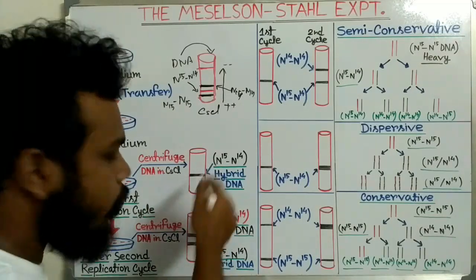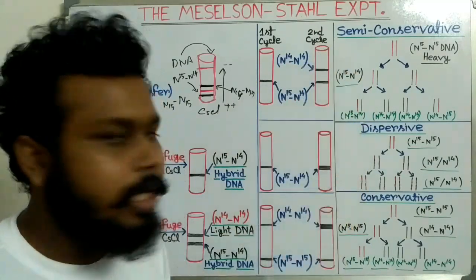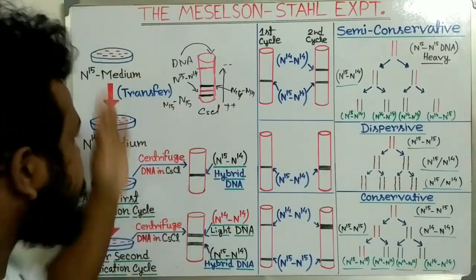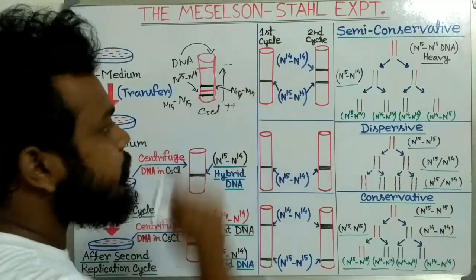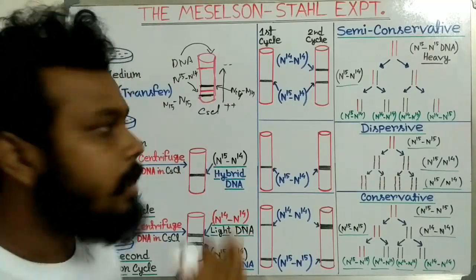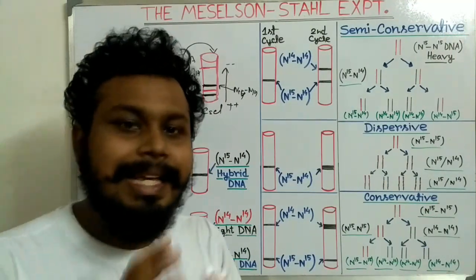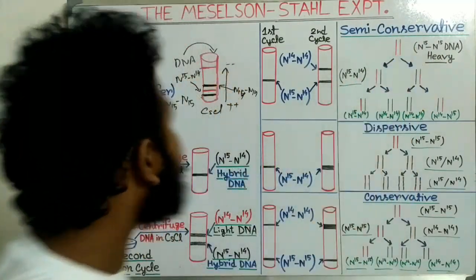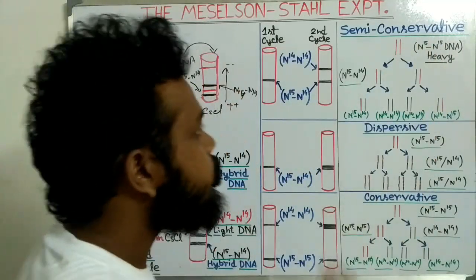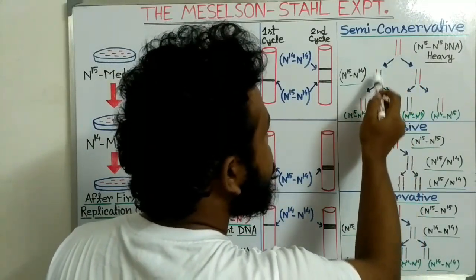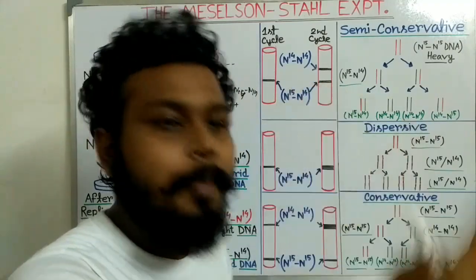From these observed results, the question is: which of the three models gives the same result? That will be the correct model of DNA replication. If the semi-conservative model's expected result matches the observed result, it may be the correct model. In the semi-conservative model, the parental DNA present in N15 medium has both strands as N15/N15 — the heavy DNA. After the first replication cycle, the two strands get separated; the red parental DNA strand is the N15 strand, acting as a template to make a new N14 strand.